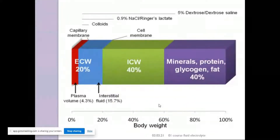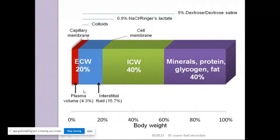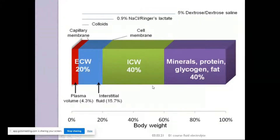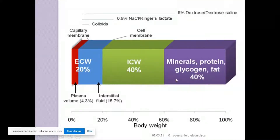The same thing represented in a different way: the extracellular is only 20%, of which plasma is around 4.3%, and interstitial fluid is around 15%. Intracellular water is across the cell membrane. Beyond that, we have minerals, proteins, glycogen, and fat.